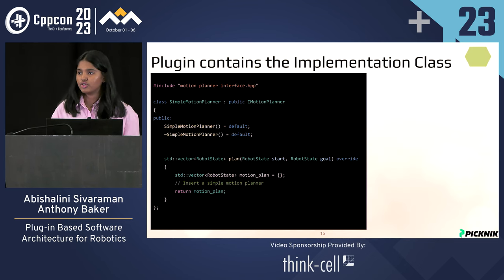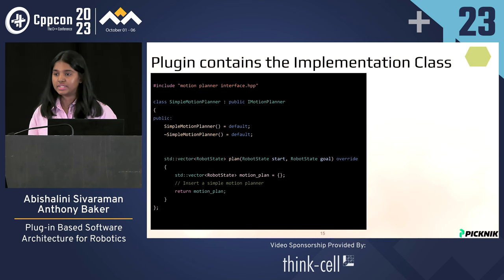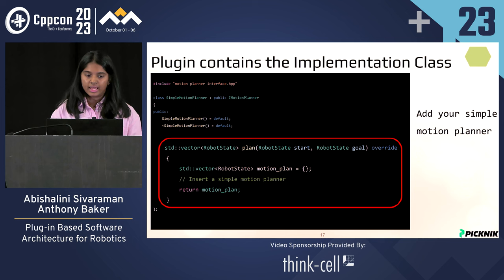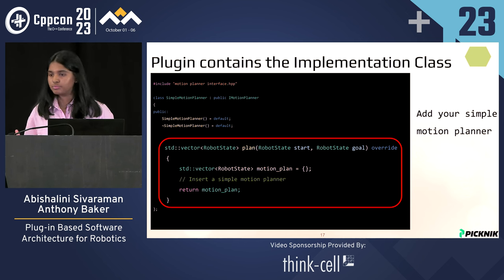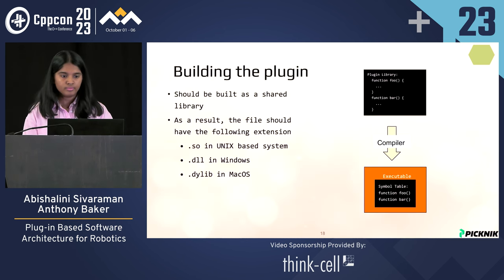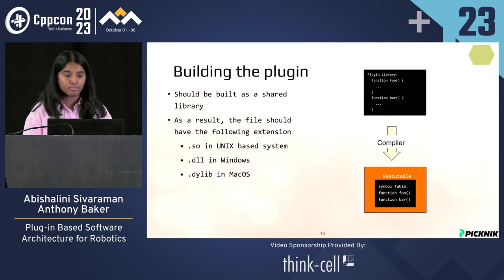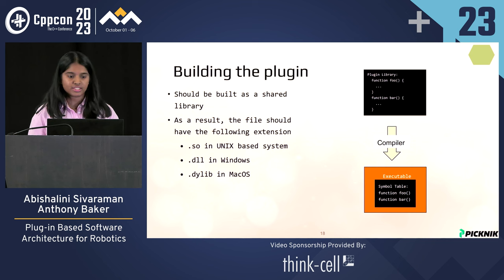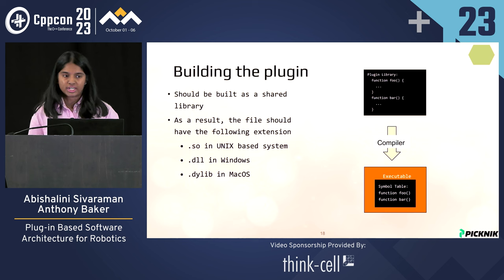Now that we have the interface, let's see how the plugin is architected. The plugin contains the implementation. The simple motion planner will inherit from the motion planner interface defined in our core system, and in the plan function you can override it and add your own simple motion planner. When building a plugin, it should be built as a shared library — with a .so extension on Unix-based systems, .dll on Windows, and .dylib on macOS. There was a great talk on shared libraries just before this one, so reference that if you want to learn more.